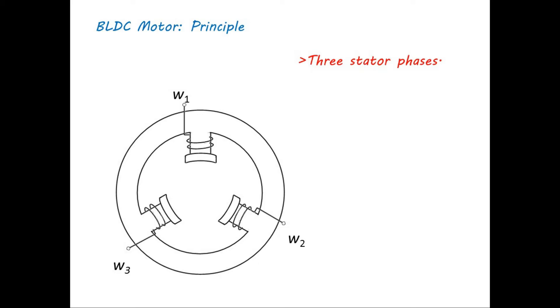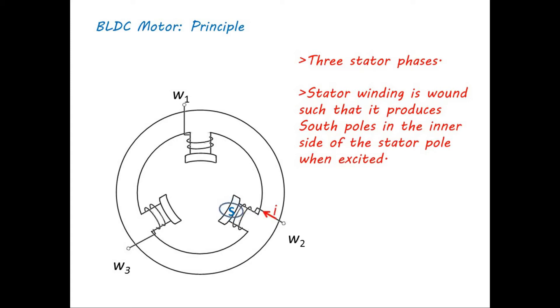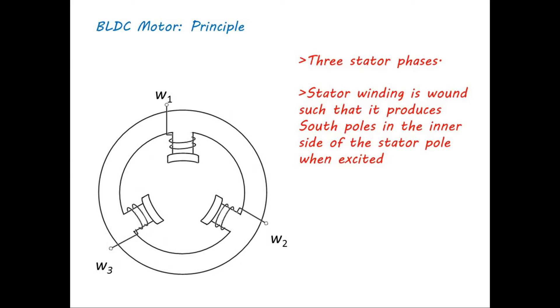Remember, stator winding is wound such that it produces south poles in the inner side of the stator pole when excited with the direction of current shown in figure. The permanent magnet rotor of this machine has two poles.